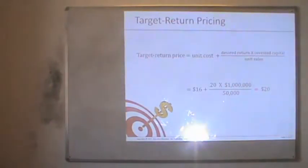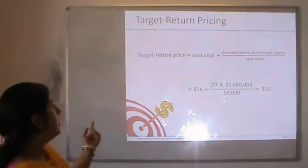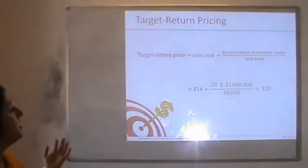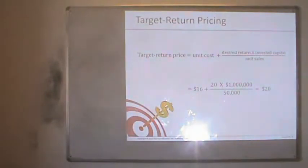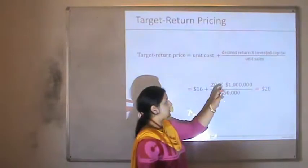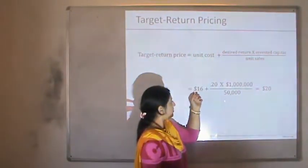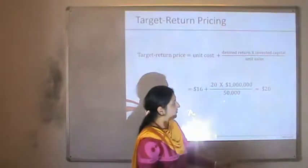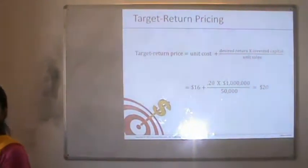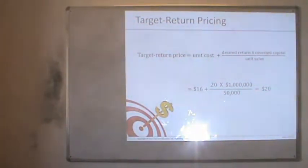The next is target return pricing. On the total amount that the company has invested, the company expects a certain return. The formula for target return pricing is: unit cost plus (desired return multiplied by invested capital) divided by unit sales. So if a company has a unit cost of $16, a desired rate of return of 20%, invested capital of 1 crore, and sales of 50,000 units, the calculation gives $20. Whether you use the capital pricing method or the margin pricing method, the company determines how much price per unit to charge in order to reach their desired rate of return.